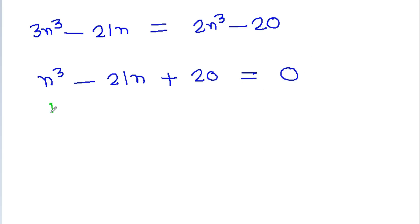So n cubed minus 21n minus 20 equals 0. If we put n equal to 1, then 1 cubed is 1 minus 21 times 1 is 21 minus 20, which equals 0. So n minus 1 is a factor of this cubic equation.